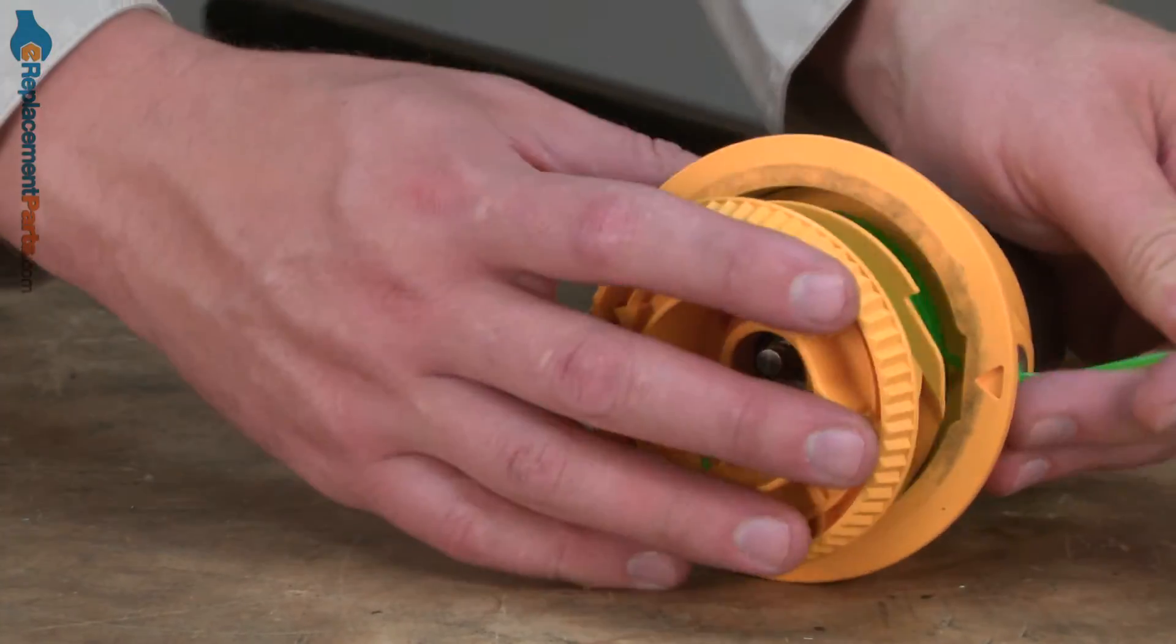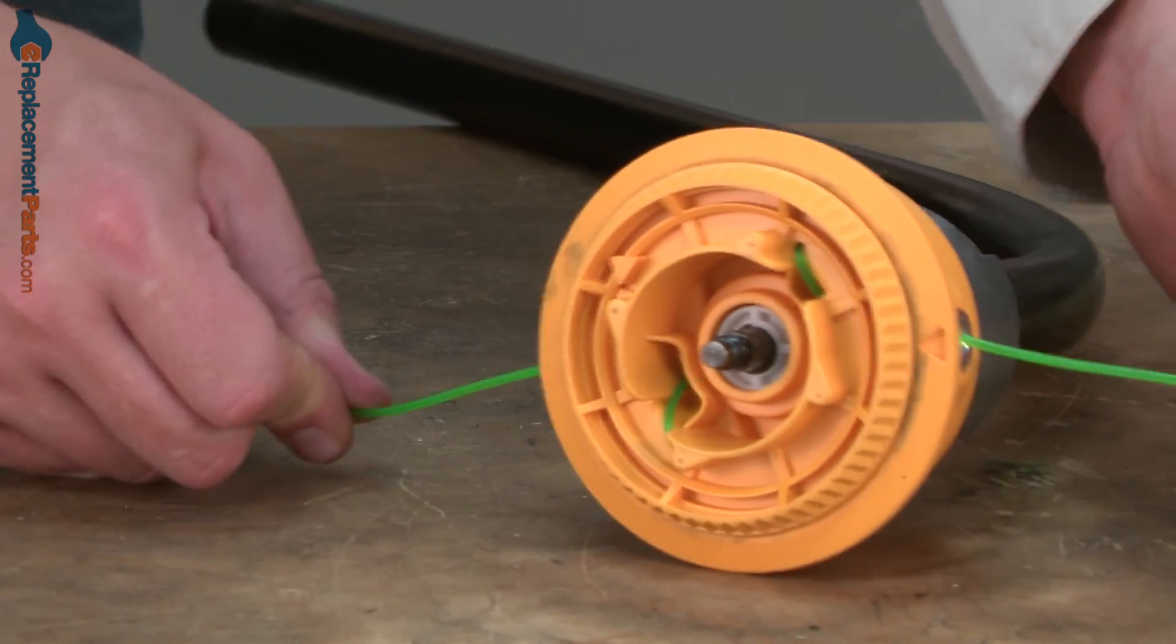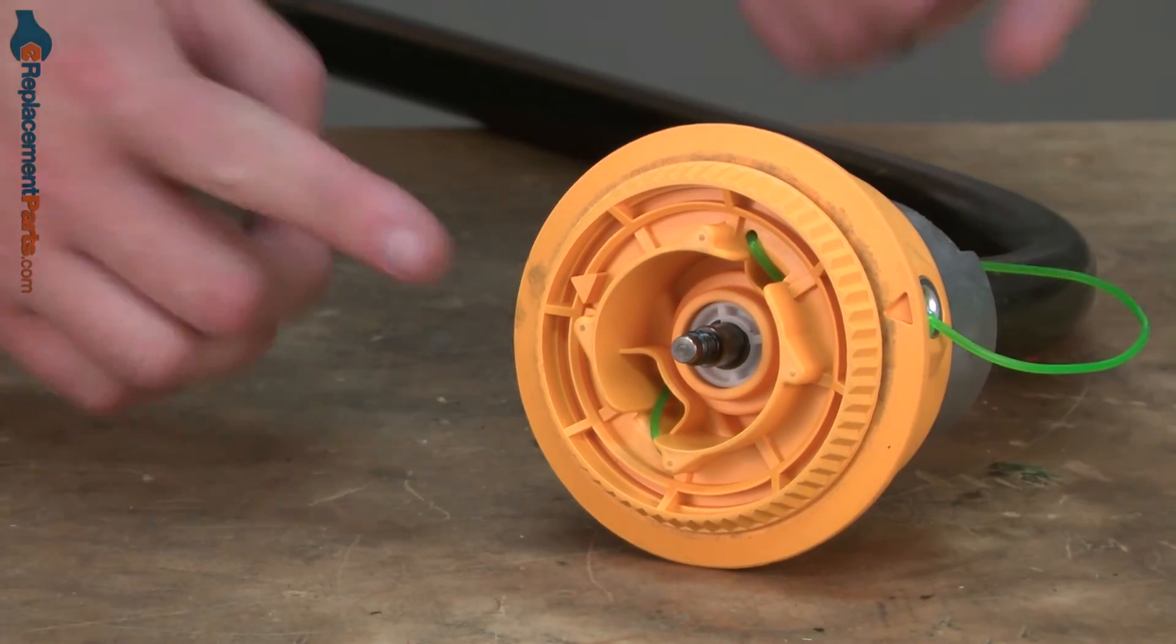And then slide the head over the shaft. Once in place, I'll give a tug on the lines and that's to pull them away from those temporary clips.